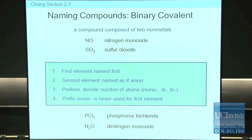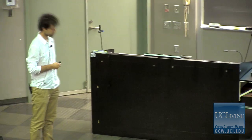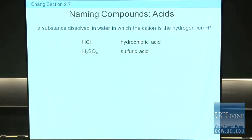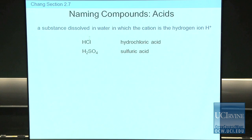The naming for binary covalent compounds is different from binary ionic compounds — we specify the number of atoms. Now let's move to another set of important compounds: acids. What is an acid? We'll talk about it extensively later, but very briefly, an acid is a substance that, when dissolved in water, splits off a hydrogen ion, forming a dissolved proton. Acids are typically written with H as their first element, like HCl — hydrochloric acid — and sulfuric acid.